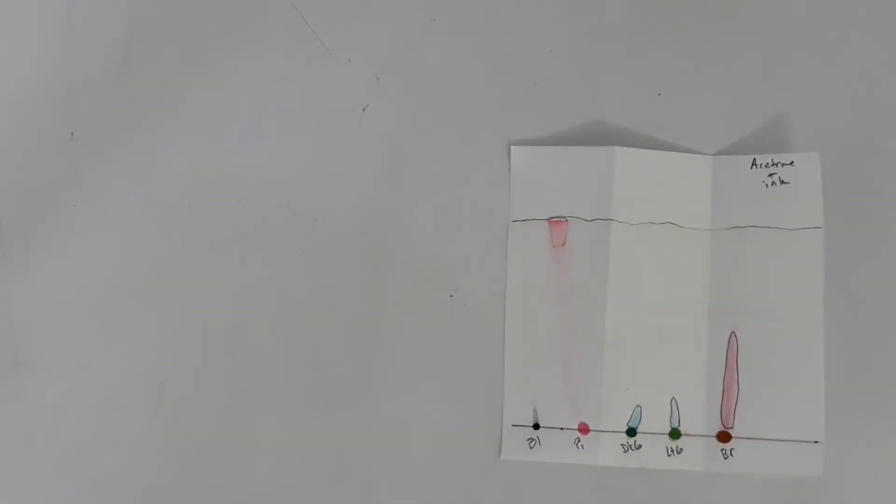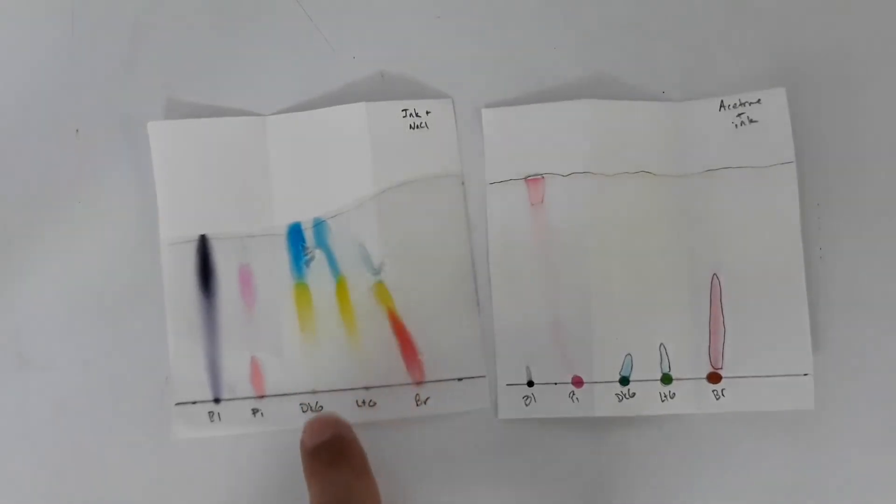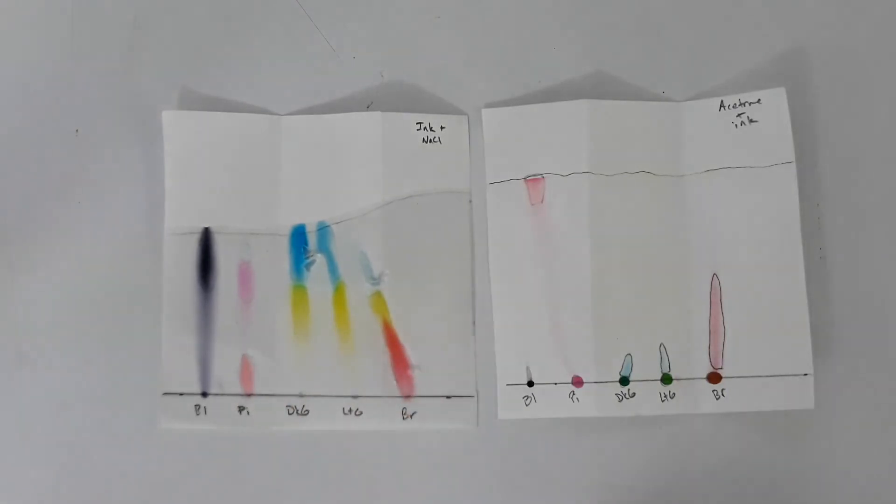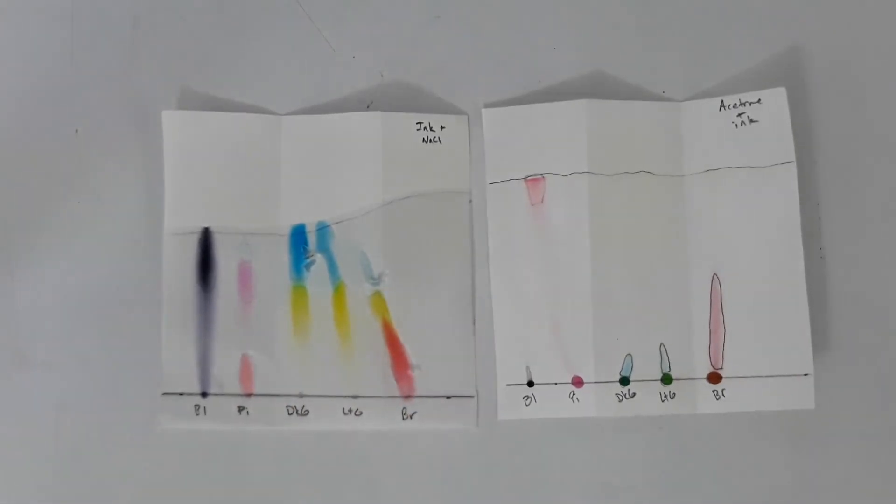So it's really important to mark those colors and here you can see it is, it's already started continuing moving up the page. My solvent front is not level there but that's okay. We will analyze these in the lab and see what we come up with.